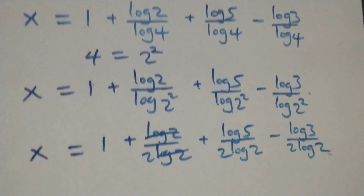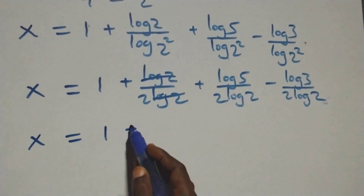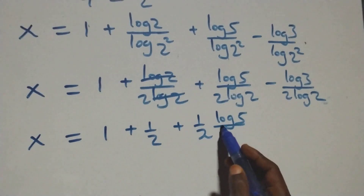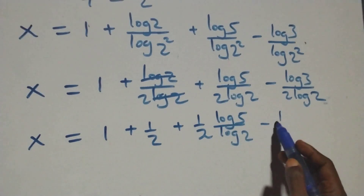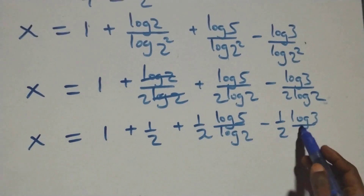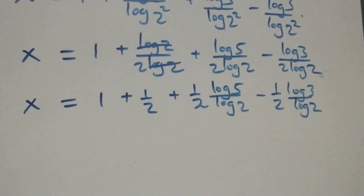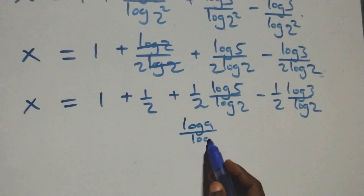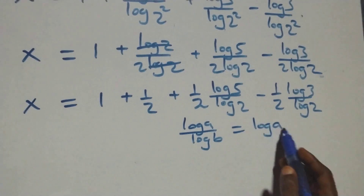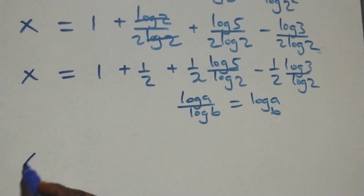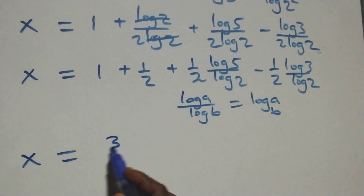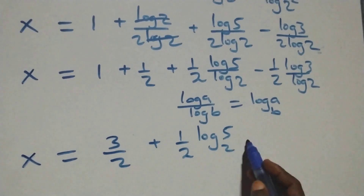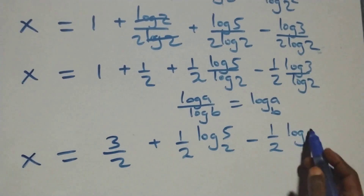Here log 2 cancels each other. This becomes x equals 1 plus 1 over 2 plus 1 over 2 times log 5 over log 2, also minus 1 over 2 times log 3 over log 2. Then we apply the change of base rule: log A over log B can be written as log A to base B. So we have x equals 1 plus 1 over 2, which is the same as 3 over 2, then plus 1 over 2 log 5 base 2 minus 1 over 2 log 3 base 2.